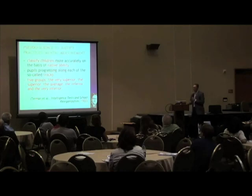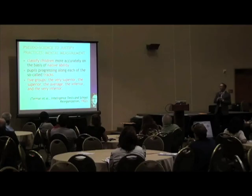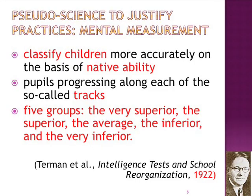He was also the person to develop this system of testing. In his view, it allowed us to classify children by their native ability so we could put them into tracks. He suggested five groups: the very superior, the superior, the average, the below average, and the very below average. Keep that in mind — it'll come back.